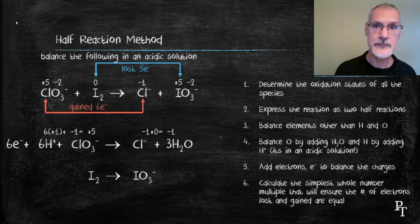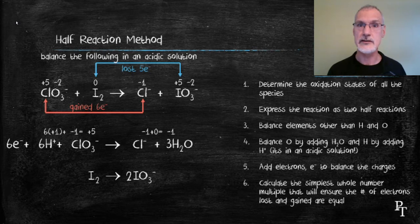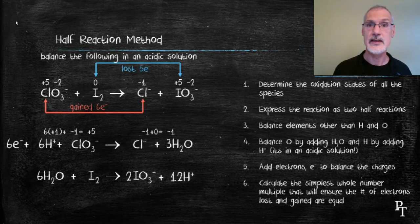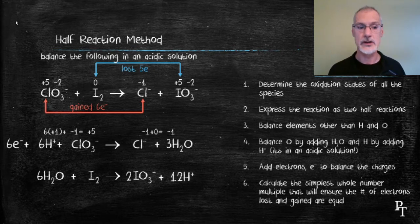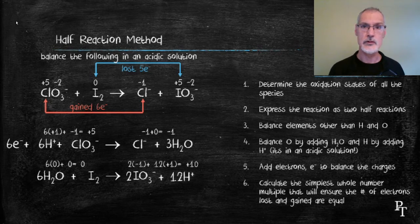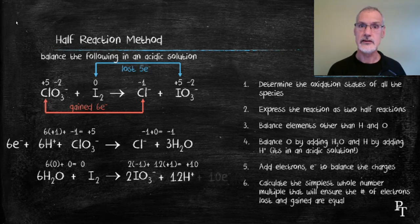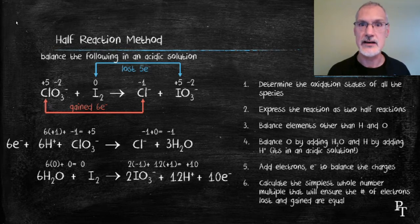I'll now move down to the iodine. The first thing I need to do is balance everything other than hydrogen and oxygen, so I'm going to put a two in front of the iodine. Now I'll balance the oxygens by adding six water molecules and the hydrogens by adding 12 acid particles. Again, I'll determine the charge on both the product and reactant sides. The products have a charge of plus 10 — they're the higher of the two — so to bring it down, I'm going to add 10 electrons to that side.